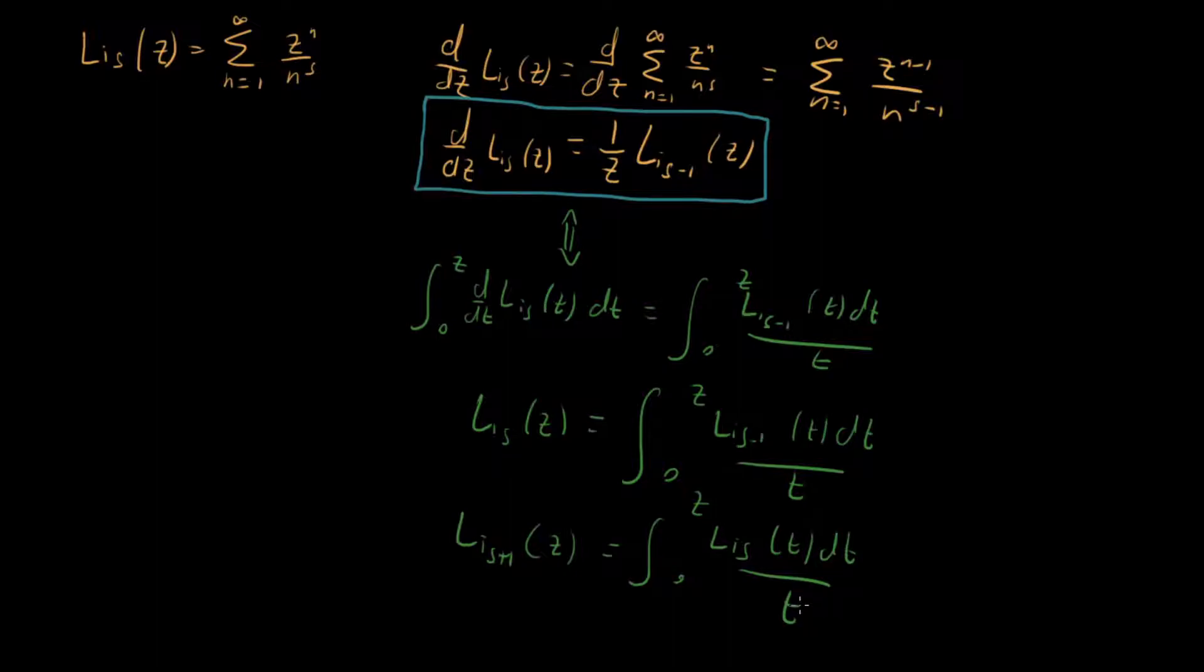And so this is a little bit nicer because what this tells us is that starting with our polylogarithm with it being just sub s, if we take an integral of that dividing by t, then we effectively just shift our polylogarithm up by one in s.